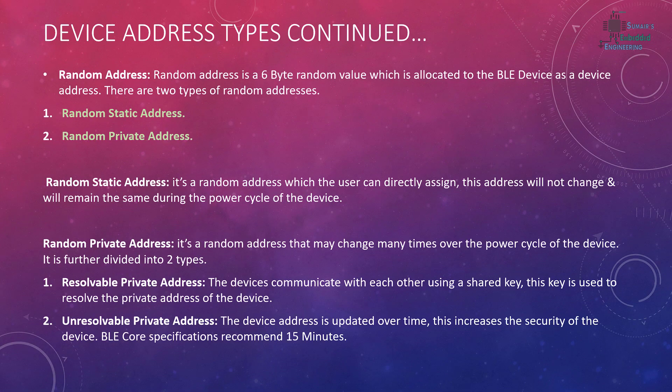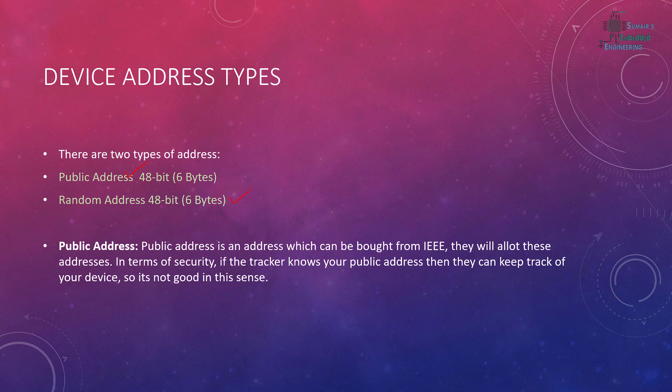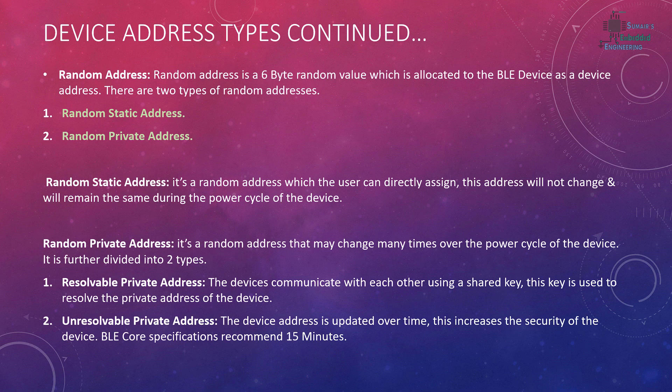The next important part is the random address. So the two base address types are the public address and the random address. The random address is a six-byte random value allocated to the peripheral device to serve as its address.